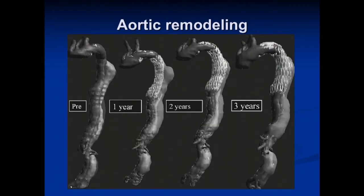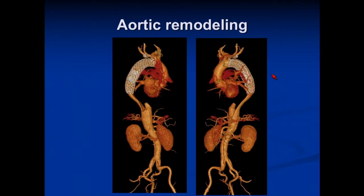Here's what you hope to see with aortic remodeling: over time you can see the false lumen decreasing in size. Here's another case showing nice obliteration of the false lumen. The true lumen, which was quite compressed, is now open; here's the false lumen thrombosed. You still have the false lumen going all the way down into the iliac vessels, but not causing a problem.